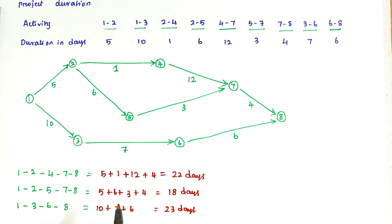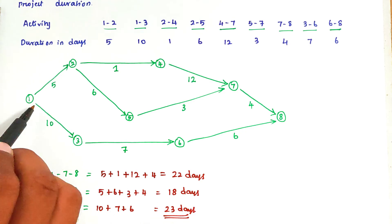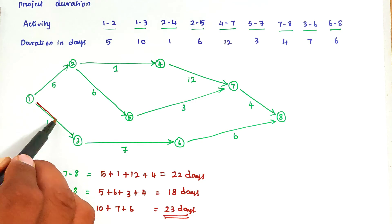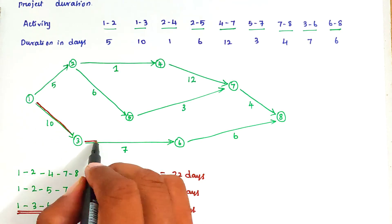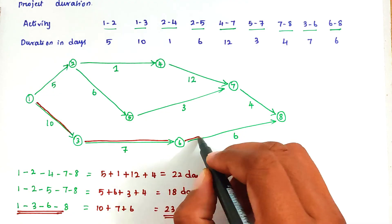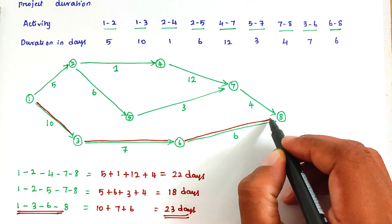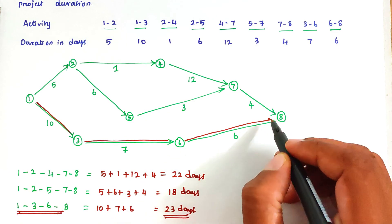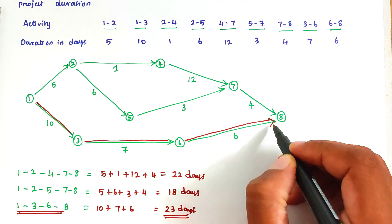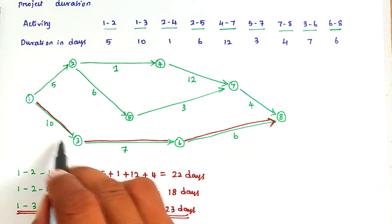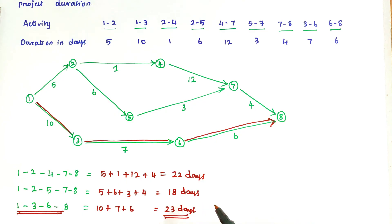So the path containing the maximum duration is 23 days — path 1-3-6-8. This path is the critical path and this duration is the critical duration. So now we can mark the critical path in double line on the network diagram. This is the critical path and this is the critical duration. This is the method we use to solve the problem. We will see more in the next video. Thank you.